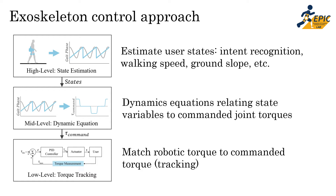So how do we control these exoskeleton devices? We typically break this down into three control layers: high, mid, and low-level. High-level layers dictate user state variables such as ambulation modes and walking speed. These trickle down into the mid-level layer where we implement dynamic equations such as torque controllers and impedance controllers, utilizing state information to determine where in the gait cycle to provide assistance. The commanded torque then goes to the low-level control layer, which uses algorithms like closed-loop feedback control to ensure the commanded torque is matched.